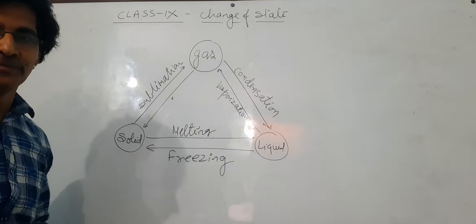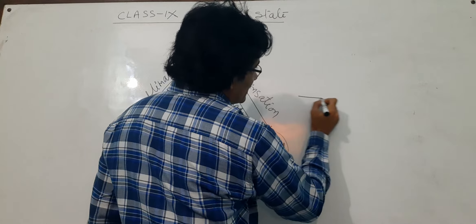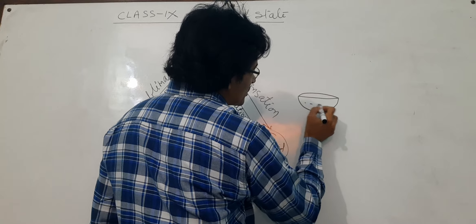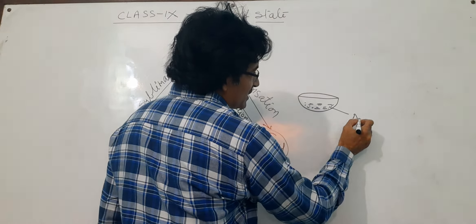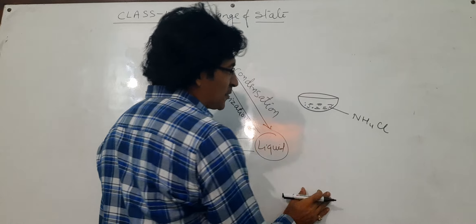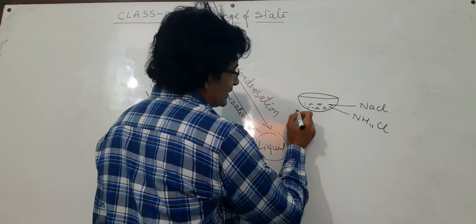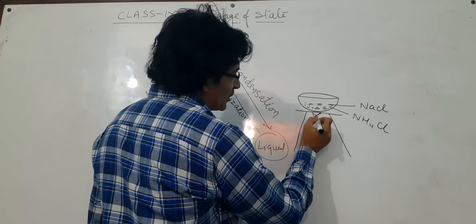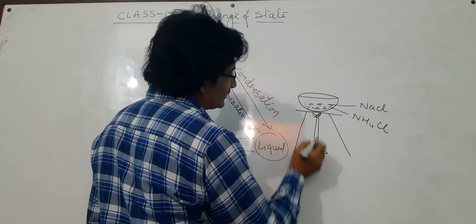That is the effect of pressure on gases. Now, talking about solid changing into gas or gas changing into solid directly — this process is known as sublimation. There are certain materials which directly change from solid to gas state and from gas state to solid state. There is one activity in our book; let us take that activity.